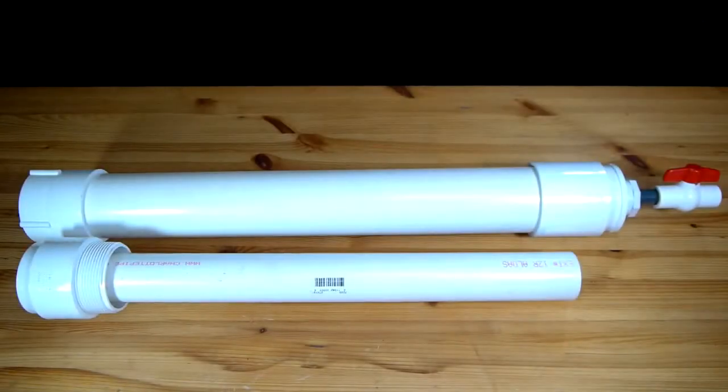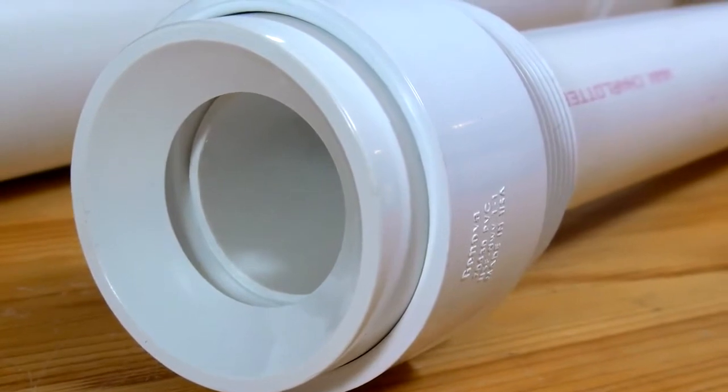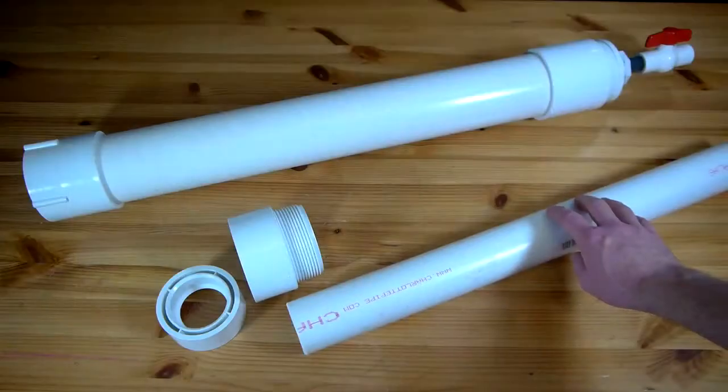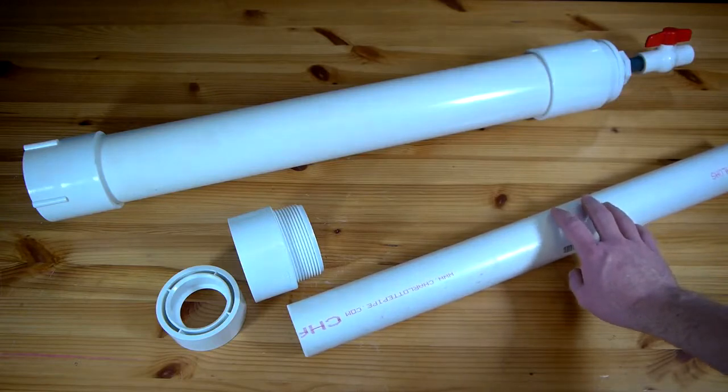I start this project with a 3 foot length of 3 inch diameter PVC as the chamber, and a length of 2 inch diameter PVC that is 3 feet and 2 inches long for the barrel. All pipe and fittings used in this project must be pressure rated.